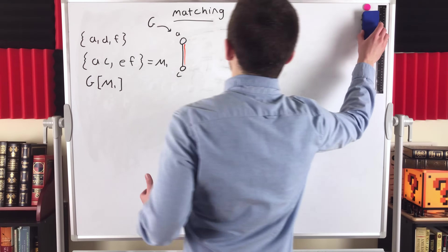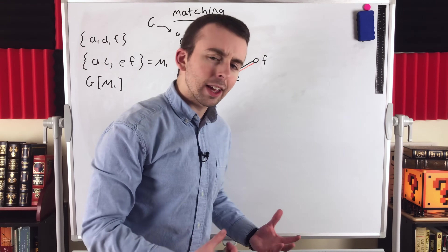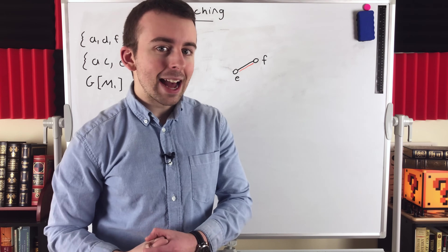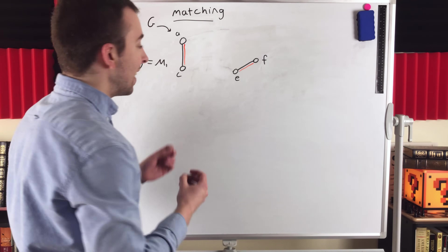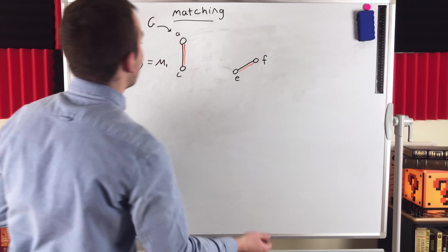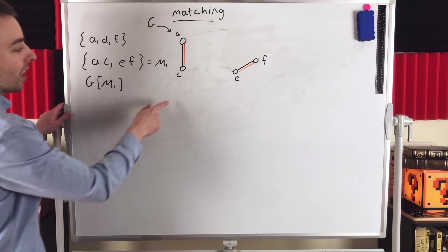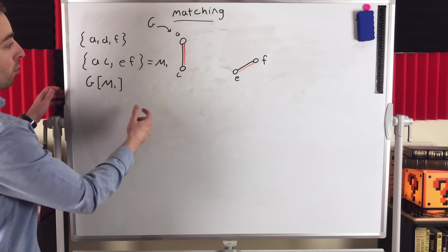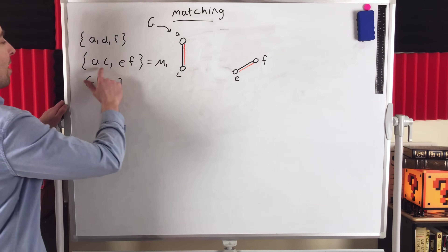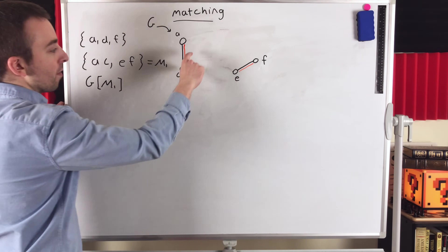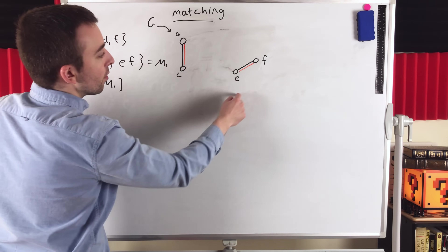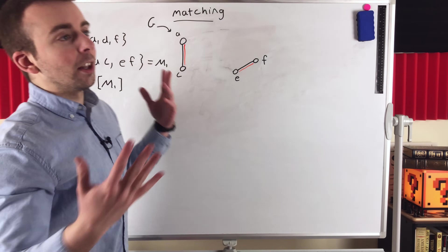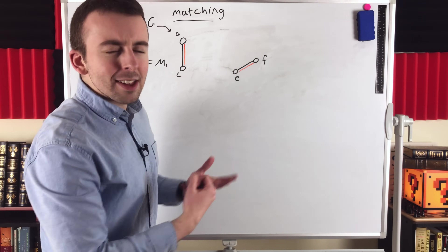The subgraph contains the edges in the matching as well as their incident vertices. So if you're reading a paper or textbook that introduces a matching and then starts talking about that matching as a graph, what's being talked about is the graph created by taking the edges of the matching and their incident vertices. They're very strongly related — you just take the edges of the matching and the incident vertices and there's your subgraph.